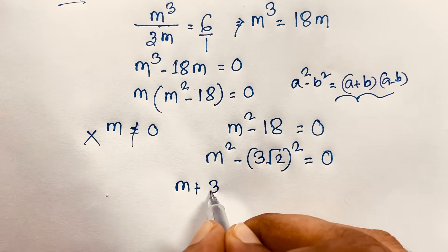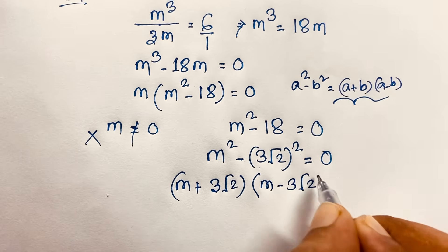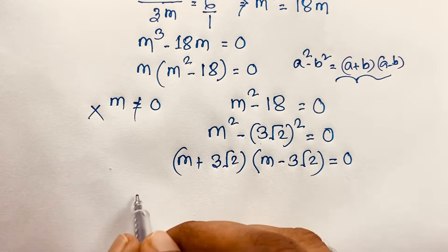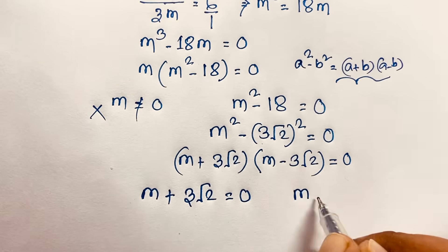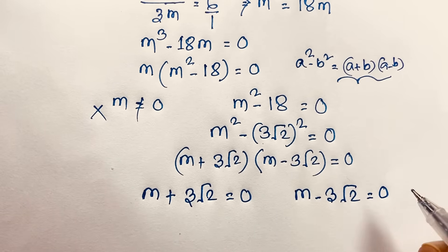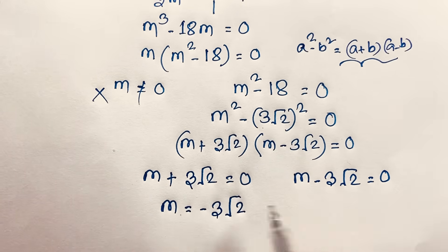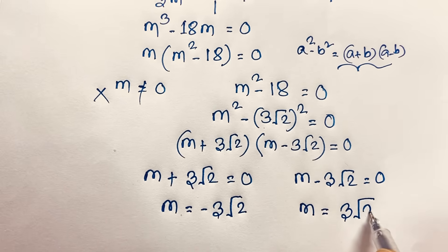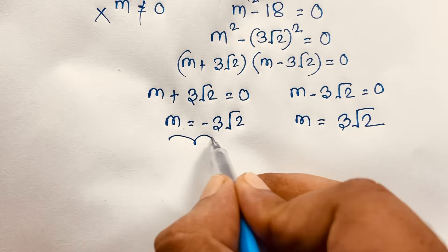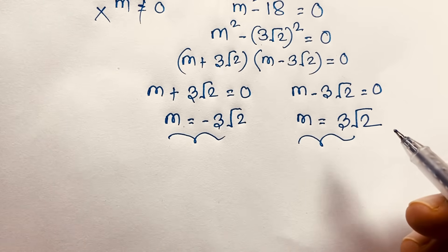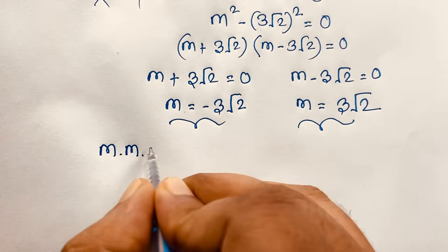So we get (m plus 3√2)(m minus 3√2) equals 0. We find two cases: first case m plus 3√2 equals 0, and another case m minus 3√2 equals 0. Then m equals negative 3√2 and m equals positive 3√2. This is our final answer. Now let's verify our question: m times m times m over m plus m plus m equals 6.